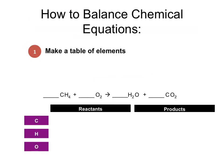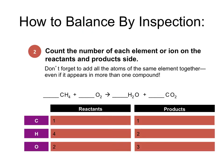So let's balance some chemical equations. The first thing we're going to do is make a table of the elements — two columns, one that says reactants and the other that says products, with a line between them. Off to the far left, we will put the elements found within the reaction: carbon, hydrogen, and oxygen. We want to count the number of each element on the reactant and product side and fill in the chart. On the reactant side, we've got one carbon, four hydrogen, and two oxygen. On the product side, we have one carbon, two hydrogen, and 1 plus 2 oxygen to give us a total of 3. Don't forget to add all the atoms of the same element together, even if they appear in more than one compound.